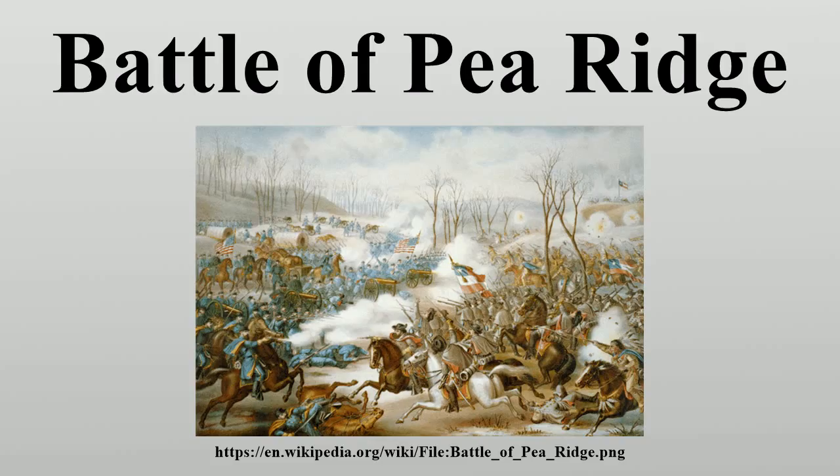Curtis also sent a task force under Colonel Peter J. Osterhaus north to reconnoiter along Ford Road. Osterhaus' force consisted of Colonel Nicholas Grusel's brigade of his own 1st Division, several cavalry units led by Colonel Cyrus Bussey, and 12 cannons. McCulloch's force consisted of a cavalry brigade under Brigadier General James McIntosh, an infantry brigade under Colonel Louis Hubert, and a combined force of Cherokee, Choctaw, Chickasaw, Creek, and Seminole Cavalry under Brigadier General James Albert Pike.